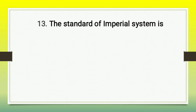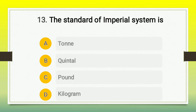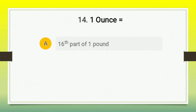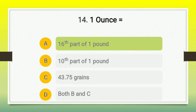The next question: the standard of the empirical system is — A) ton, B) [option B], C) pound, D) kilograms. The right answer is option C, pound. Then question number 14: one ounce is equal to — the correct answer is 1/16 part of one pound.